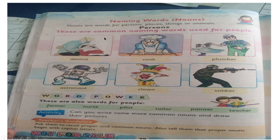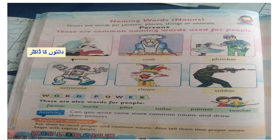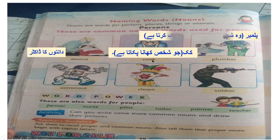A person's name as a noun — occupations are common nouns: dentist, cook, plumber, astronaut, clown, and soldier. Plumber is the person who works with pipes. Astronaut is also a common noun for a person.